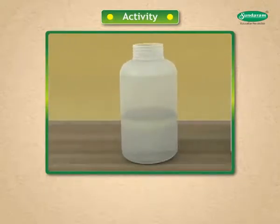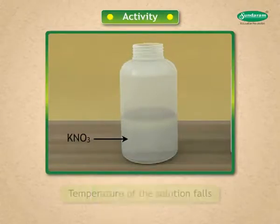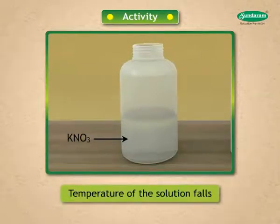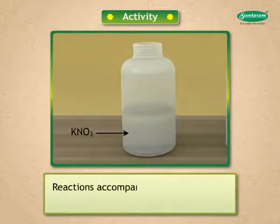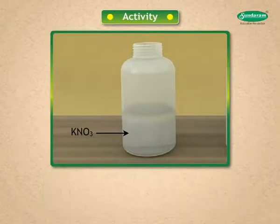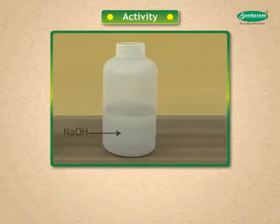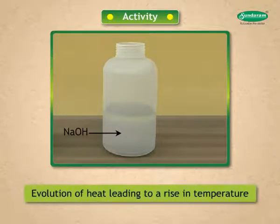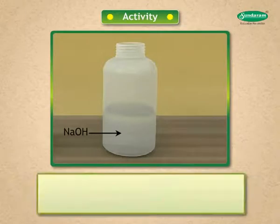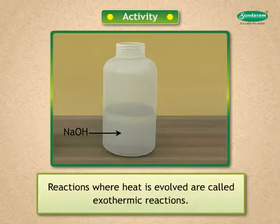In the case of KNO₃, there is absorption of heat during the reaction. Hence, the temperature of the solution falls. Reactions accompanied by absorption of heat are called endothermic reactions. When NaOH dissolves in water, there is evolution of heat leading to a rise in temperature. Reactions where heat is evolved are called exothermic reactions.